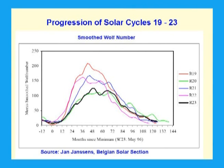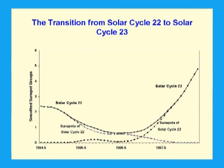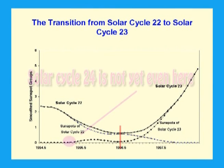The first sunspots of a new solar cycle appear usually at more than 20 degrees latitude on the sun's surface. According to the last couple of solar cycles, the first sunspots appear 12 to 20 months prior to the start of the new cycle. Apart from a few spotless magnetic dipoles, there have not been any reverse polarity sunspots with a latitude of more than 20 degrees to the date of this presentation. This means that solar cycle 24 is at least one year away, or the observational rule is wrong.